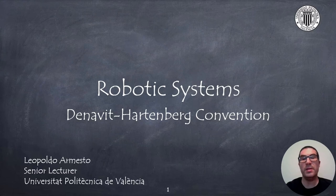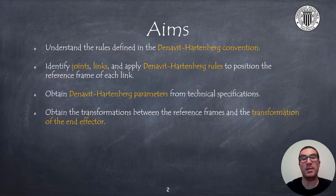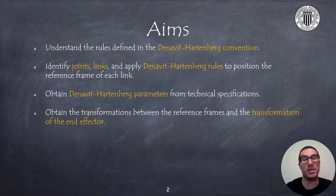Hello. In this presentation I will introduce the Denavit-Hartenberg Convention to obtain forward kinematic models of robot arms. The main goal is to explain the rules defined by the Denavit-Hartenberg Convention. We will identify robot joints and links so we can apply the Denavit-Hartenberg rules to obtain reference frames associated with each of the links, and also obtain the Denavit-Hartenberg parameters from the robot technical specifications. The final goal is to express the transformation between links and, particularly, the end-effector link with respect to the robot base.